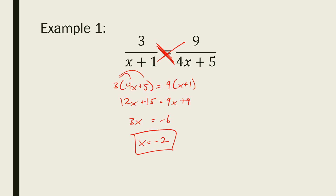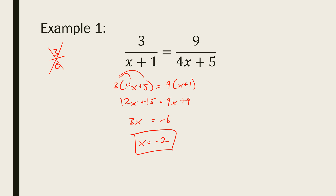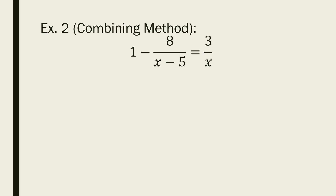I went through that really quick. Just so you know, there could be extraneous solutions. Why? What could go wrong with fractions? Remember, I'm not allowed to have fractions where I divide by zero. So if an x makes me divide by zero, that's very bad. Let's plug negative 2 into the denominators: negative 2 plus 1 is not 0, good. And 4 times negative 2 plus 5 is not 0. Since neither denominator is 0, this really is a good solution — not extraneous.